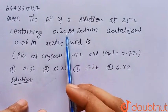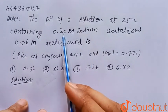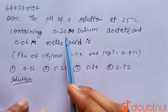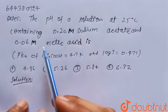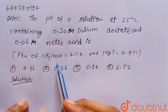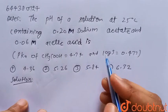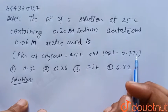These are the concentrations of sodium acetate and acetic acid. Given that pKa of acetic acid is 4.74 and log 3 equals 0.477.